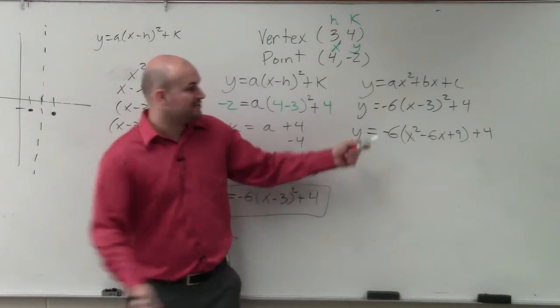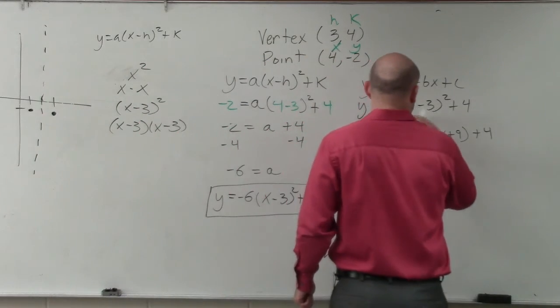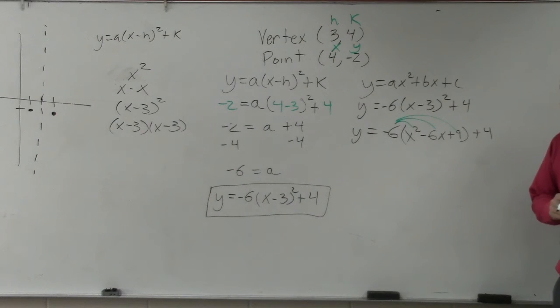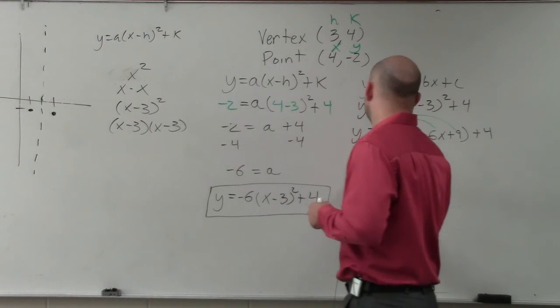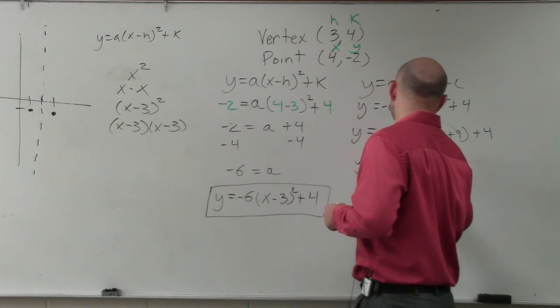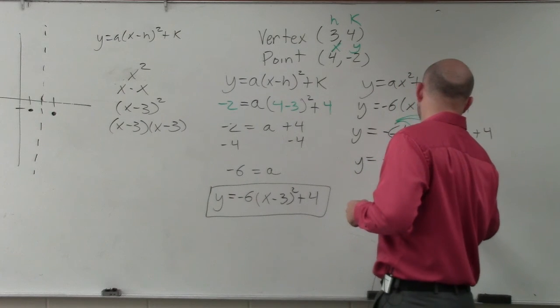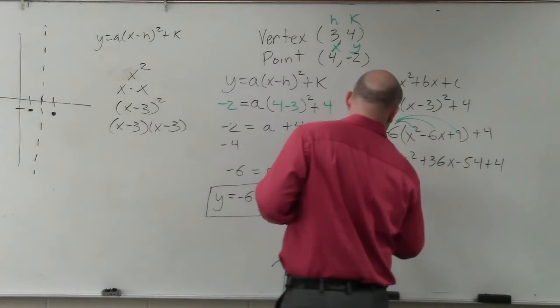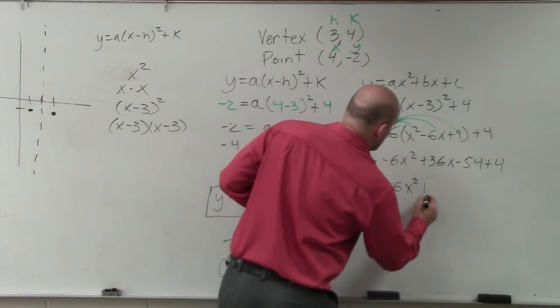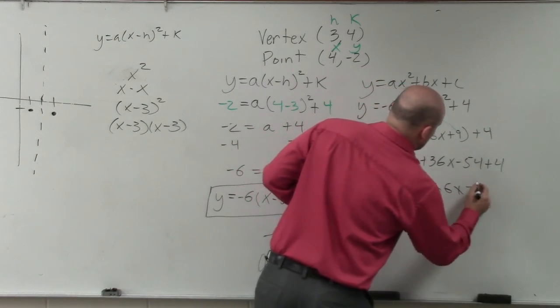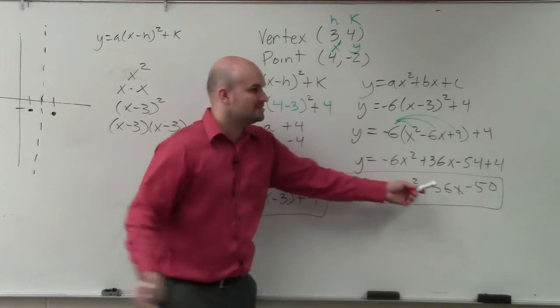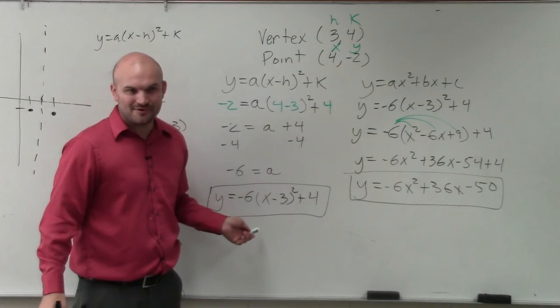Then I have to distribute this negative 6 because now I'm multiplying a monomial times a trinomial, so I'm going to use distributive property. So y equals negative 6x squared plus 36x minus 54 plus 4. My final equation is y equals negative 6x squared plus 36x minus 50. Standard form, vertex form.